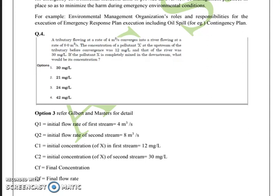They have asked that if the pollution X is completely mixed in the downstream what would be the concentration. We can easily follow this concept and it is well given in Gilbert and Masters also. Let us suppose the Q1 which is the initial flow of the first stream which is 4 cubic meter per second. Then we have Q2 which is the initial flow rate of the second stream which is 8 cubic meter per second. Then we have C1 which is the initial concentration of X in the first stream which is 12. Then we have C2 which is the initial concentration of X on the second stream.